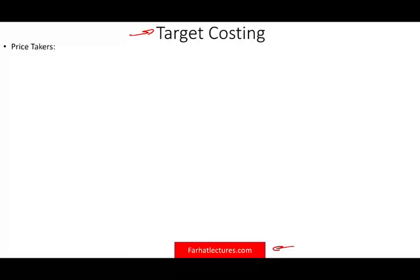So when do we use target costing? Target costing is used when we are price takers. What is a price taker? Price takers means we don't have an option — in other words, we don't set our own price. Why not? Because we are not selling a unique product. Our product is in a market where everyone is competing on price. For example, when Apple came out with their first iPhone, Apple was a price setter, not a price taker.